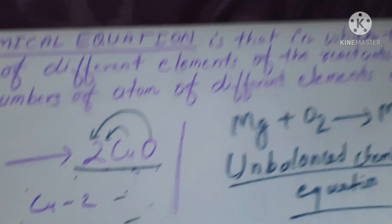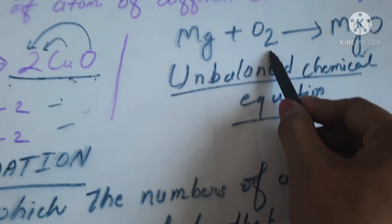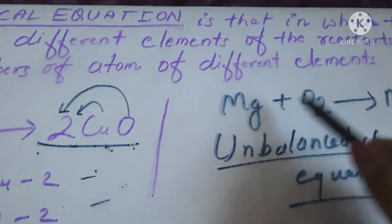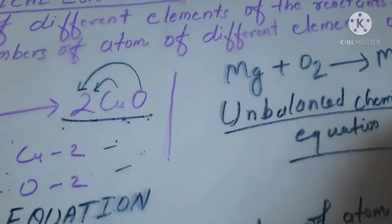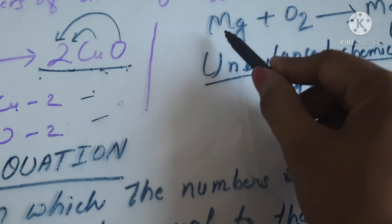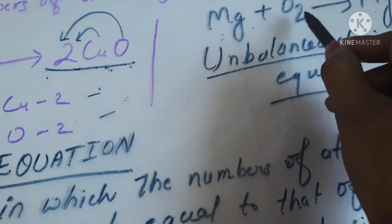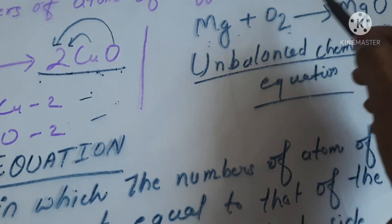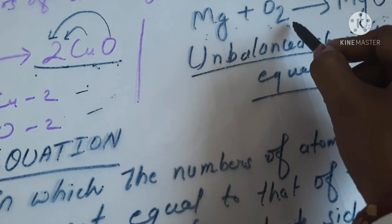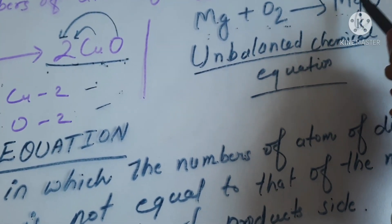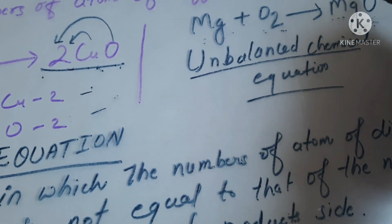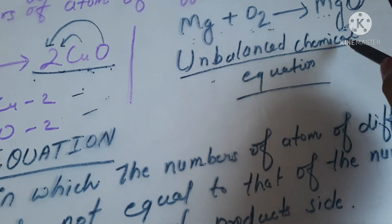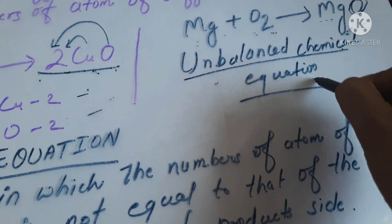Let's take another example: magnesium reacts with oxygen to form magnesium oxide. Is it a balanced chemical reaction? Of course not. The number of atoms in the reactant side and in the product side is not equal, because oxygen contains two atoms, but in the product — magnesium oxide — oxygen is only one. So it is an unbalanced chemical equation.